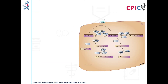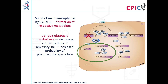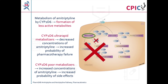Amitriptyline is metabolized by CYP2D6 to form less active metabolites. In CYP2D6 ultra-rapid metabolizers, metabolism of amitriptyline is increased, which reduces the concentrations of amitriptyline in the body and increases the probability of pharmacotherapy failure. In CYP2D6 poor metabolizers, metabolism of amitriptyline is reduced, which increases the concentrations of amitriptyline in the body and increases the probability of side effects.